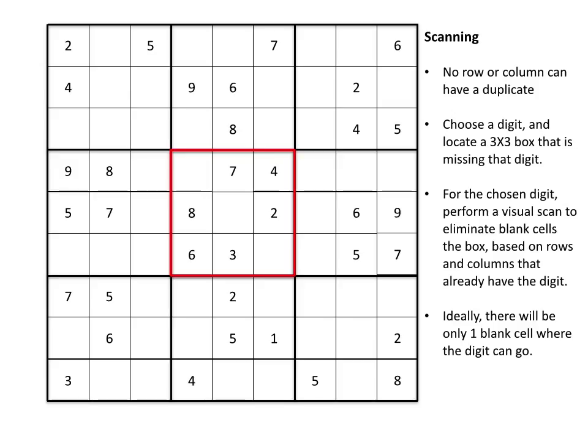So what I do is I'm going to pick a specific number, and I'm going to look for a 3x3 box that doesn't yet have that number. And typically I start with 1 and work in ascending order 1 through 9. So starting with the 1s, I'm going to look for a box that does not have a 1, and I'm going to focus my attention on this center box here.